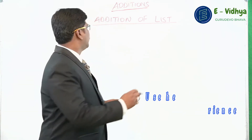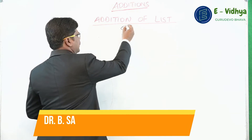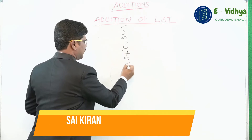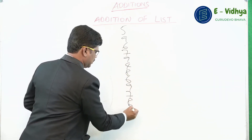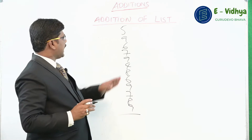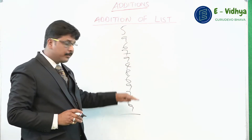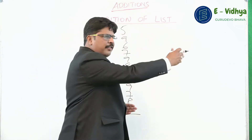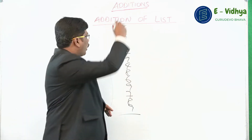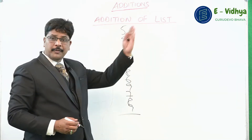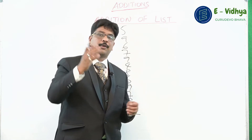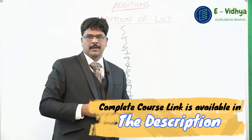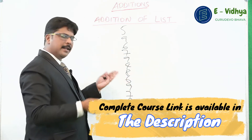Now let us take a list and work it out. I am taking some random numbers. Normally people add up from top to bottom, but in Vedic math we calculate from bottom to top. Normally in academics we do from right to left; in Vedic math we do left to right. There is a wonderful secret to that, which I will be teaching in future videos. But for now, calculate from bottom to top.